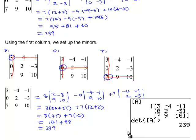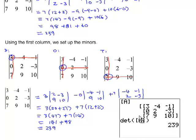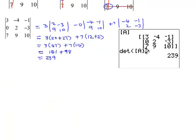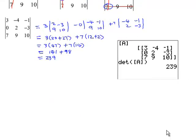Using the calculator to verify: enter matrix A and use the determinant function to get 239. You can extend the cofactor method to 4 by 4, 5 by 5, and larger — it works for all sizes.